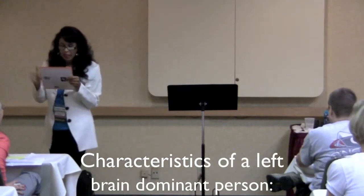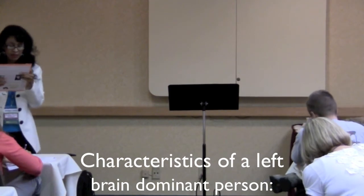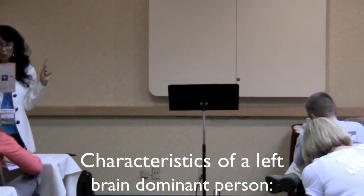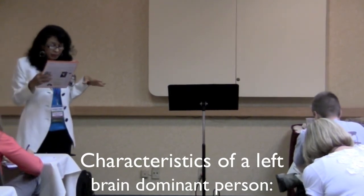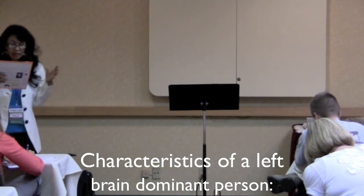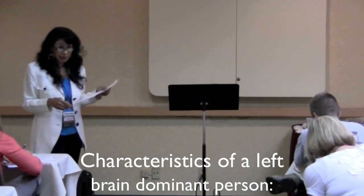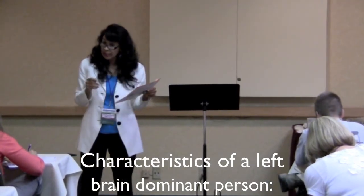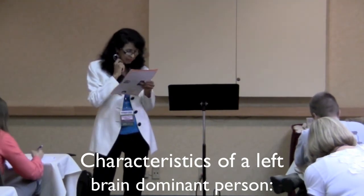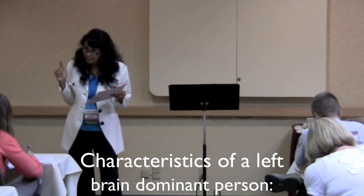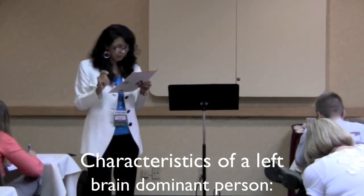Left brain characteristics: likes to read and is very logical, organized, verbal, and analytical. Likes verbal instruction, doesn't enjoy clowning around, prefers sitting down, usually remembers things well, likes true stories, and is good at word skills like decoding words or spelling.